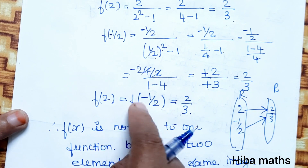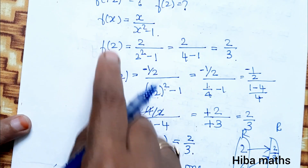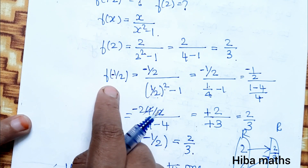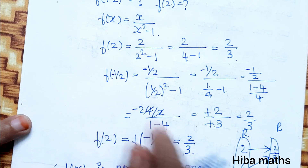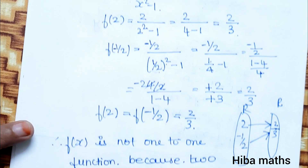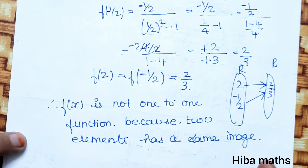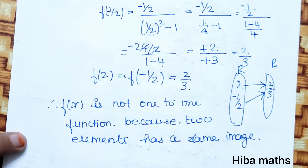To summarize: when f(x) equals f(y) does not necessarily imply x equals y — there is a second case where x equals minus 1 by y. Since distinct inputs can map to the same output, the function f(x) = x/(x² - 1) is not a one-to-one function.